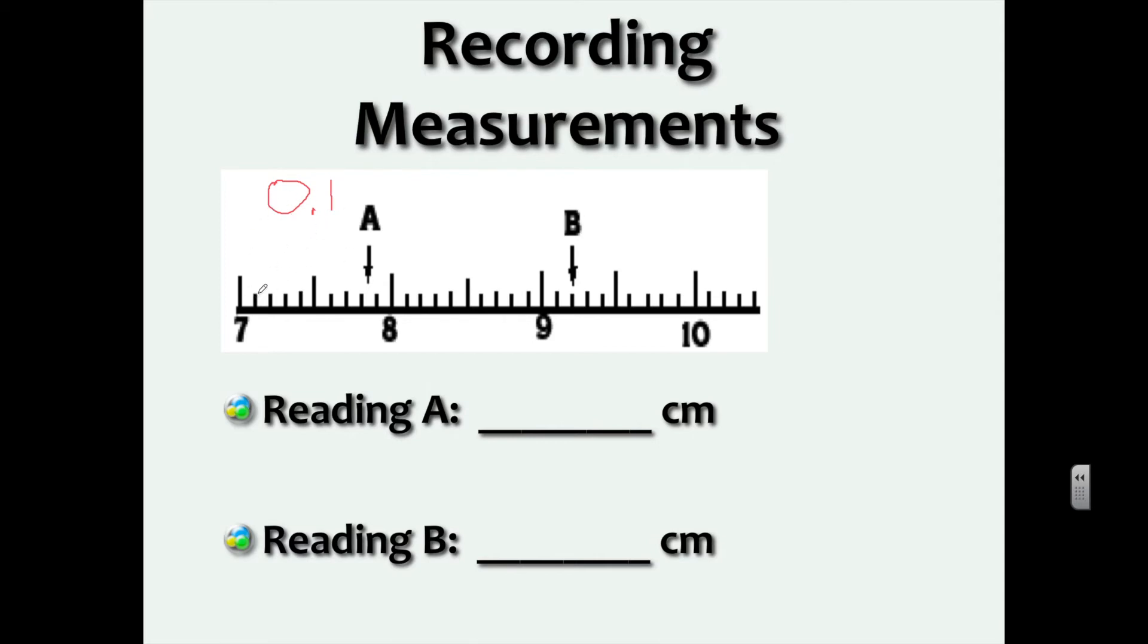I can figure out that each increment is going to be worth 0.1, right? So that's each increment. Now for each dot right here, it's going to be 7.1, 7.2, 7.3, 0.4, 0.5, 0.6, 0.7, 0.8. But right here in A, it's right in between. So it's somewhere between 7.8 and 7.9.